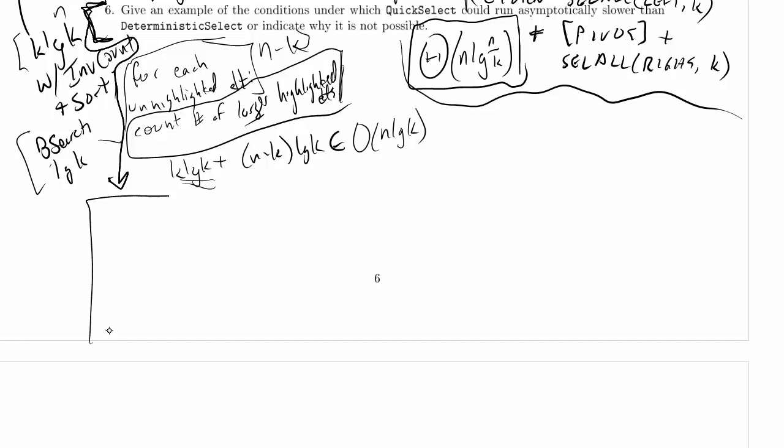So give an example of the conditions under which quick select could run asymptotically slower than deterministic select or indicate why it's not possible.